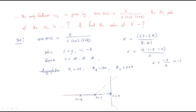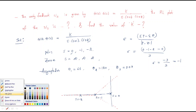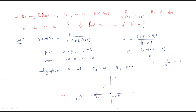So we have poles at 0, −1, and −2. Observing the real axis, there is no root locus to the right of s = 0, but there is root locus between 0 and −1, and to the left of −2. The poles flow outward following the asymptotes.